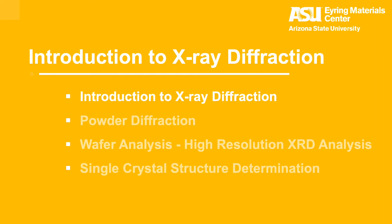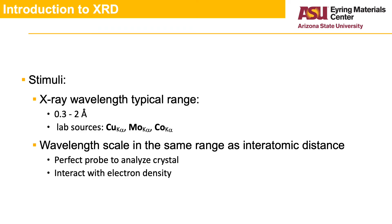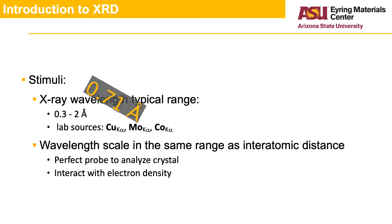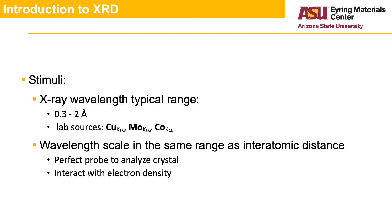In this first section, let's go over some of the basics about X-ray diffraction. In an X-ray diffraction measurement, the sample is probed using X-rays with a typical wavelength in the 0.3 to 2 angstrom range. The typical X-ray lab sources are copper k-alpha with a wavelength of about 1.54 angstrom, molybdenum k-alpha with a wavelength of about 0.71 angstrom, and cobalt k-alpha with a wavelength of 1.79 angstrom. The wavelength of the radiation is in the same range as the interatomic distances in a solid, making it a perfect probe for analyzing crystals.